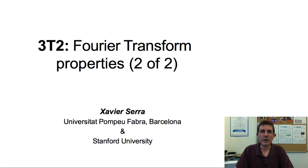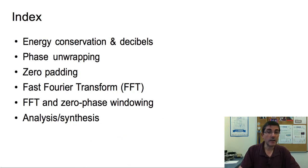Welcome back to the course on audio signal processing for music applications. In the first part of this lecture, we presented some properties of the discrete Fourier transform. We now continue with some more properties that will be very useful when using the DFT. In particular, we will talk about energy conservation and decibels, phase unwrapping, zero padding, the fast Fourier transform, the fast Fourier transform together with what we call zero-phase windowing, and finally, we will put it together with the concept of analysis and synthesis of a sound.